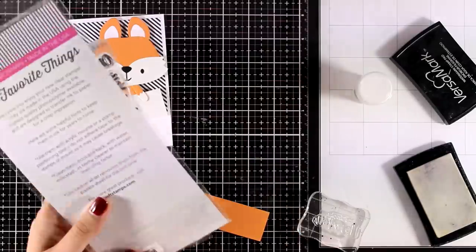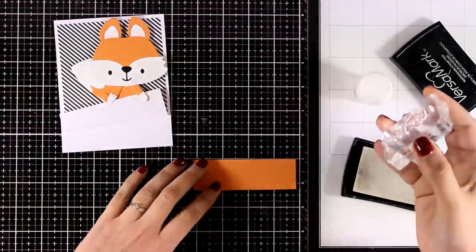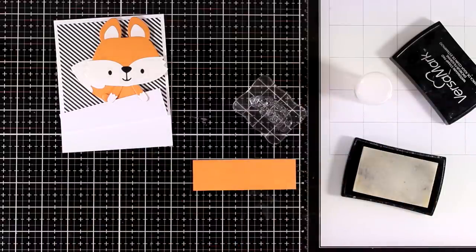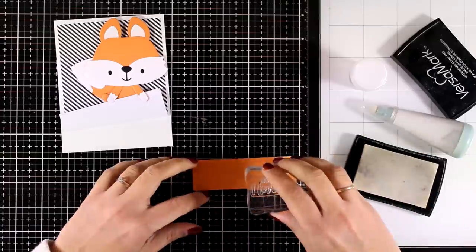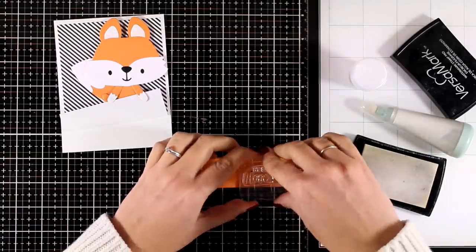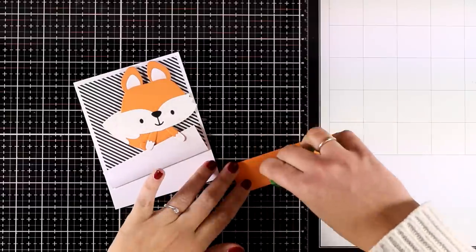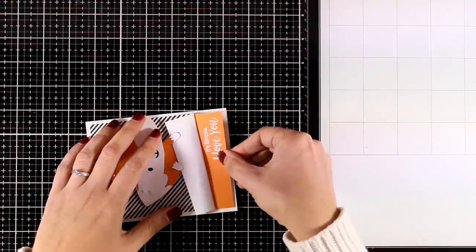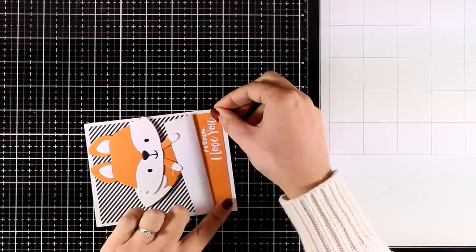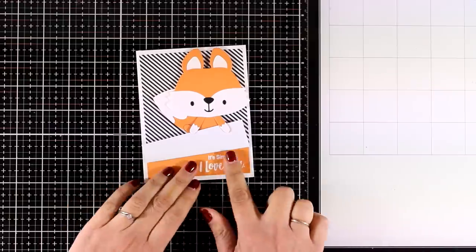This is the Sweet Nothings stamp set. It is a new stamp set packed with sentiments in a combination of typed and handwritten words which I absolutely love. I went with a sentiment that says It's Simple I Love You and I stamped that with VersaMark ink, embossed it with white embossing powder, and I did that on a piece of cardstock that is the same color as my fox. So my fox kind of holds the paper up so that you can read the message.